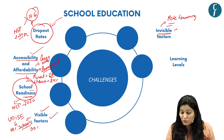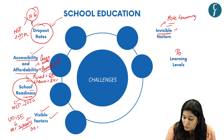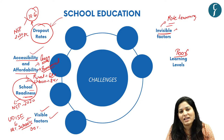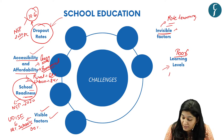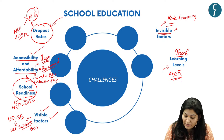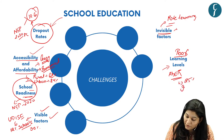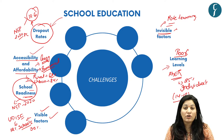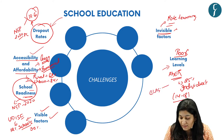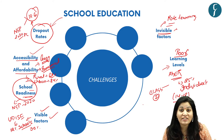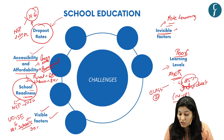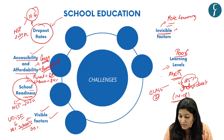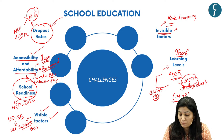The second main issue highlighted by the author is poor learning levels. The ASER report reveals that 25% of individuals between 14 to 18 years of age are not able to read even a Class 2 text in their regional language — not even in English, but in their own regional language. This fact reflects the scale of poor learning levels in India.